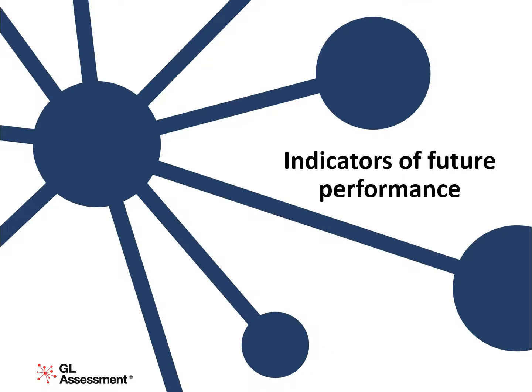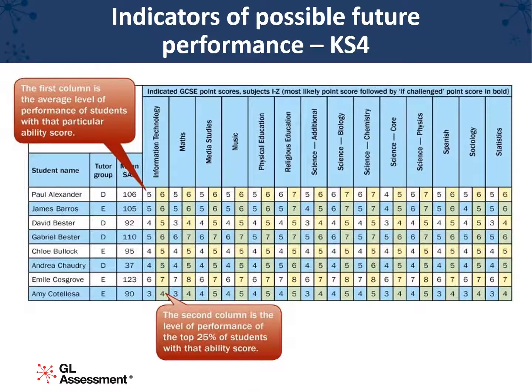CAT4 also produces indicators of future performance. This is a secondary example and shows the new number format for GCSE indicators. There are two indicators for each student based on prior performance in each subject of students with the same standardised age score. The first is based on average performance, and the second is a challenging indicator of future performance based on the performance of the top 25% of students with the same standardised age score.